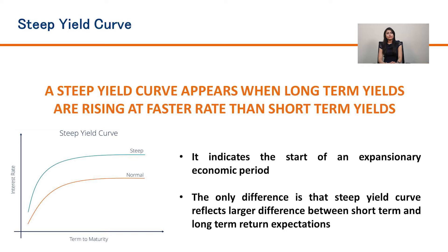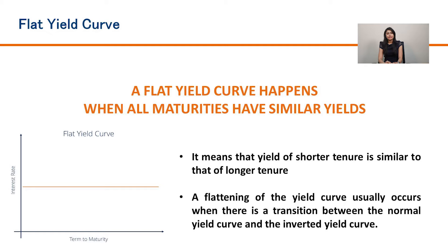The next type is the steep yield curve, where longer-term interest rates are higher than shorter-term interest rates. This generally indicates the expansion or the beginning of expansion in the economy. The key difference between the normal yield curve and the steep yield curve is that the interest rate differential between short-term and longer-term rates is higher in the steep yield curve.